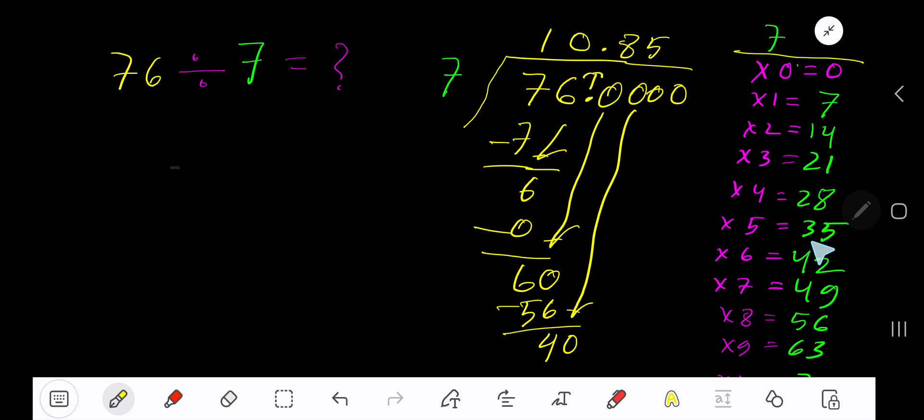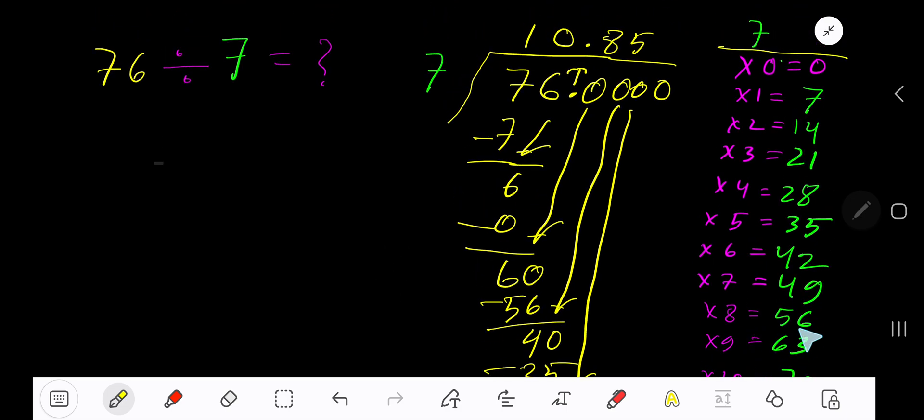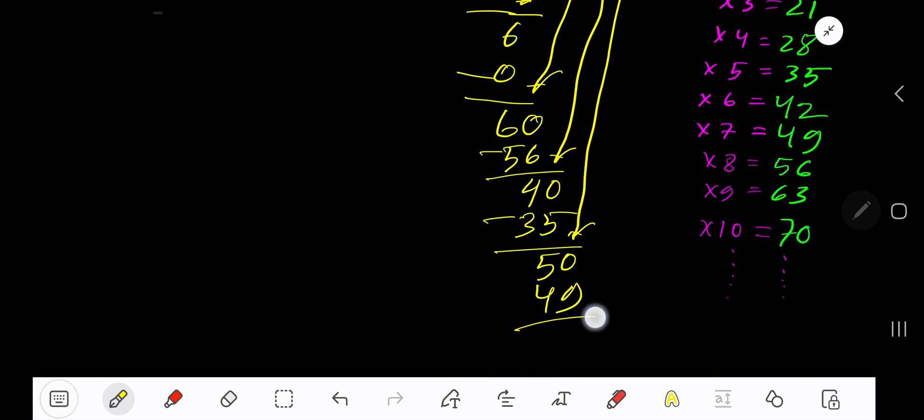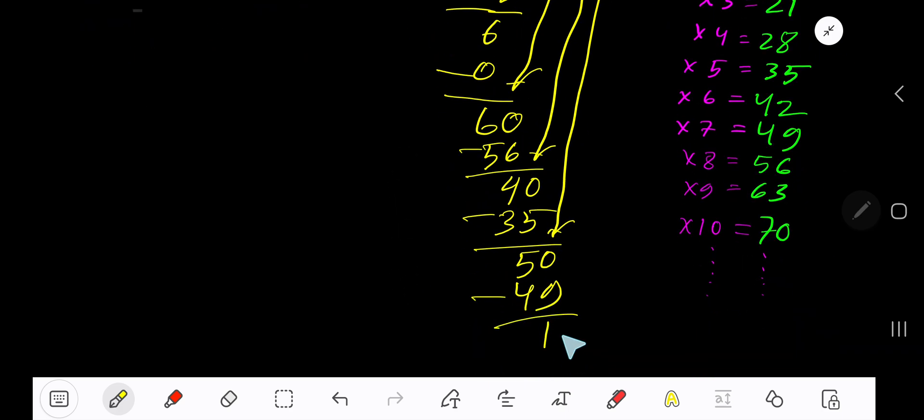5 times 7 is 35. Subtract 5. Bring down another 0. 7 goes into 50 how many times? 8 times 56, which is greater, so 7 times. 7 times 7 is 49. Subtract 1.